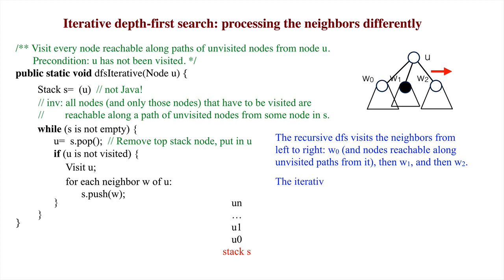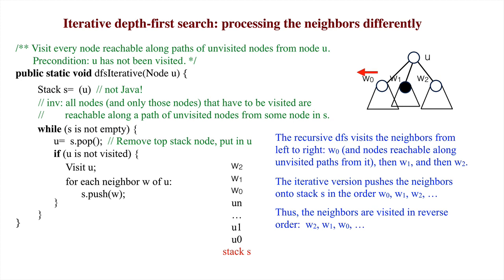The iterative version pushes the neighbors onto the stack in the order W0, W1, W2. This means that W2 will be processed and visited, if necessary, first. And it's easy to see that the neighbors are thus visited in reverse order. To get the same order in the iterative version, push the neighbors onto S in reverse order.